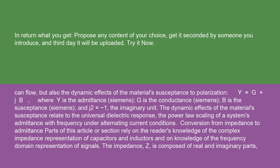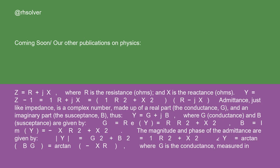The impedance Z is composed of real and imaginary parts. Z equals R plus jX, where R is the resistance in ohms, and X is the reactance in ohms.